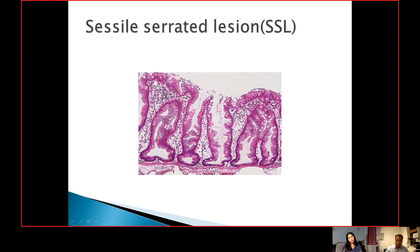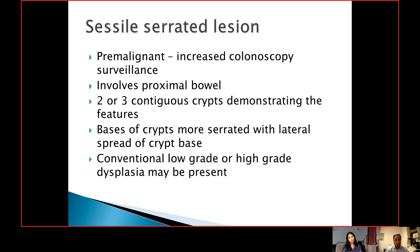The important thing to remember is this is the layer of muscularis mucosa, and when you see the crypt base, it appears as if it is lying on the muscularis propria — almost like sleeping on it — forming an inverted T-shape. The criteria require two or three contiguous crypts demonstrating these features. This is a pre-malignant polyp warranting increased colonoscopy surveillance. It usually involves proximal bowel including the appendix. The bases of crypts are more serrated with lateral spread of the crypt base. Usually they don't have low-grade or high-grade dysplasia, but you can have conventional dysplasia, which you need to examine very carefully.